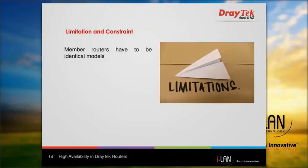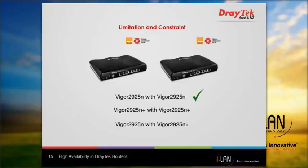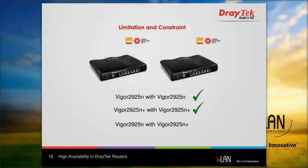The only constraint of using the High Availability mode is that all member routers need to be identical router models. For example, a Vigor2925N router will work with another Vigor2925N router, and a Vigor2925N works with a Vigor2925N Plus. However, a Vigor2925N cannot work with a Vigor2929N Plus using High Availability mode.